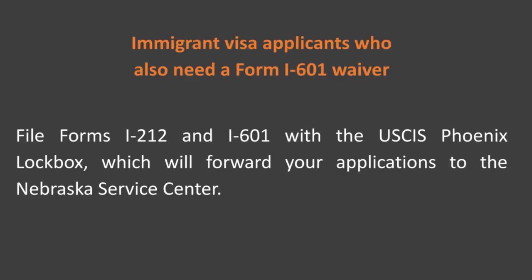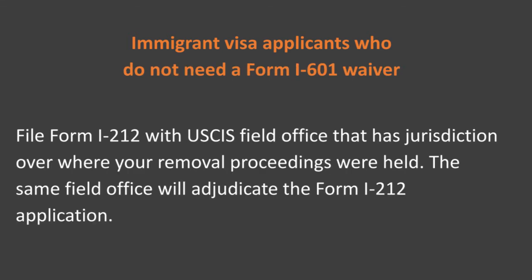Here are some examples. One: immigrant visa applicants who also need a Form I-601 waiver — file Forms I-212 and I-601 with the USCIS Phoenix Lockbox, which will forward your application to the Nebraska Service Center. Two: immigrant visa applicants who do not require a Form I-601 waiver — file Form I-212 with the USCIS field office that has jurisdiction over where your removal proceedings were held; the same field office will adjudicate the Form I-212 application. Note: if you are an immigrant visa applicant with an INA 212(a)(9)(C)(1) bar, you must be outside the US and wait 10 years abroad before filing Form I-212 with USCIS.